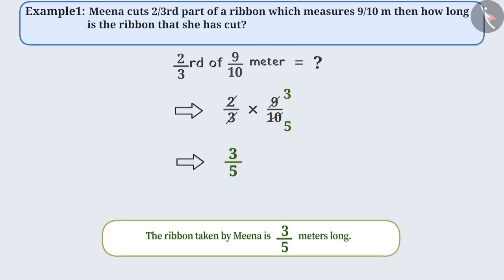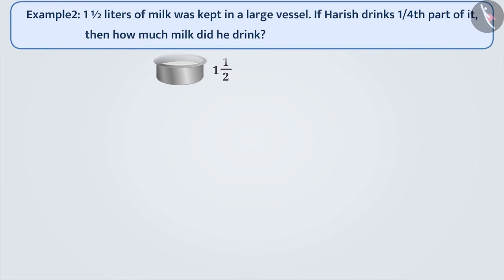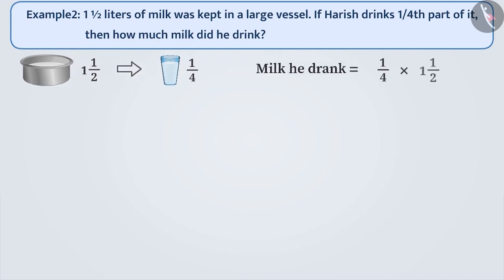Next example. One and a half liters of milk was kept in a large vessel. If Harish drinks one-fourth part of it, then tell me how much milk did he drink? Harish drank one-fourth part of one-and-a-half liters of milk. We can find the amount of milk he drank by multiplying one-fourth and one-and-a-half.